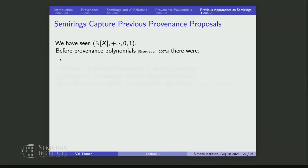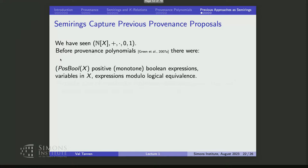We wanted to be able to say: if you do this kind of provenance, this is what you can do with it. It was a nice property of this algebraic abstraction that the previous proposals for provenance were captured as particular cases. Of course, the semiring of polynomials — one semiring to rule them all — is the most general one, the freely generated one. But there were other interesting examples used at the time.